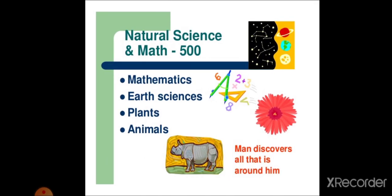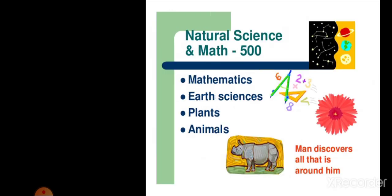Man discovers all that is around him. Natural sciences and maths comes under this category. And the number is 500 for this. Mathematics, earth sciences, plants, animals, all comes under this category.